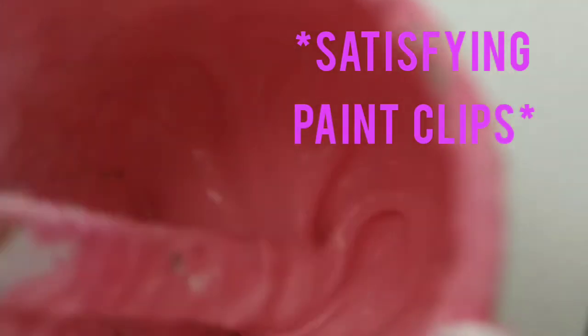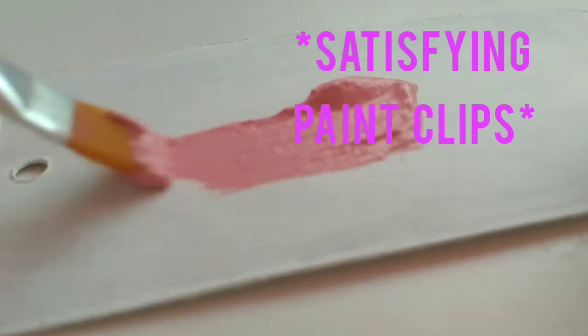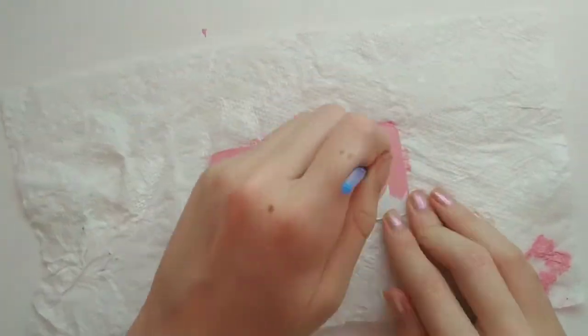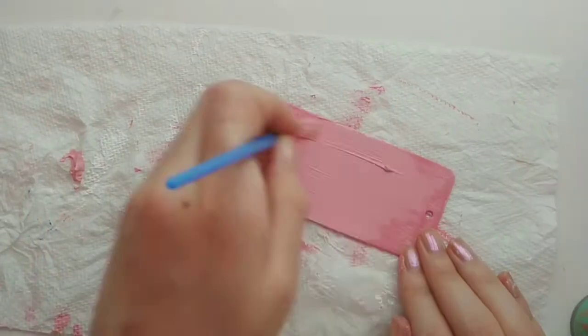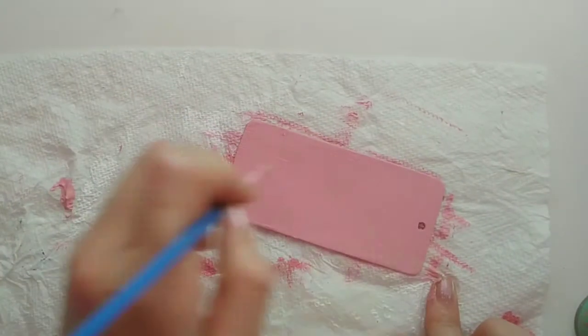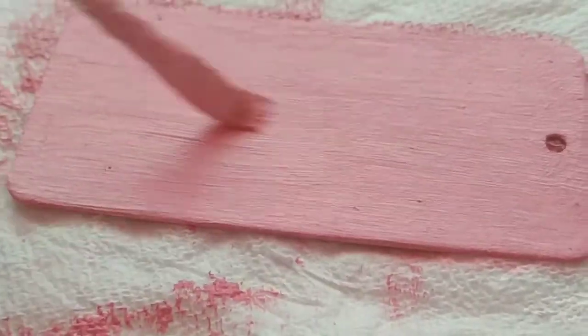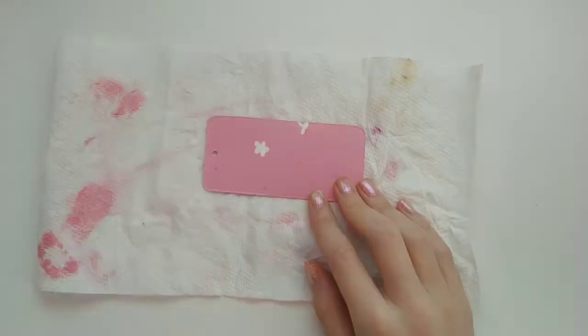I decided to start with the rectangle one, and so the first thing I did was paint the whole thing pink. And so then I went in with white paint and I started painting these little flowers all over the tag.